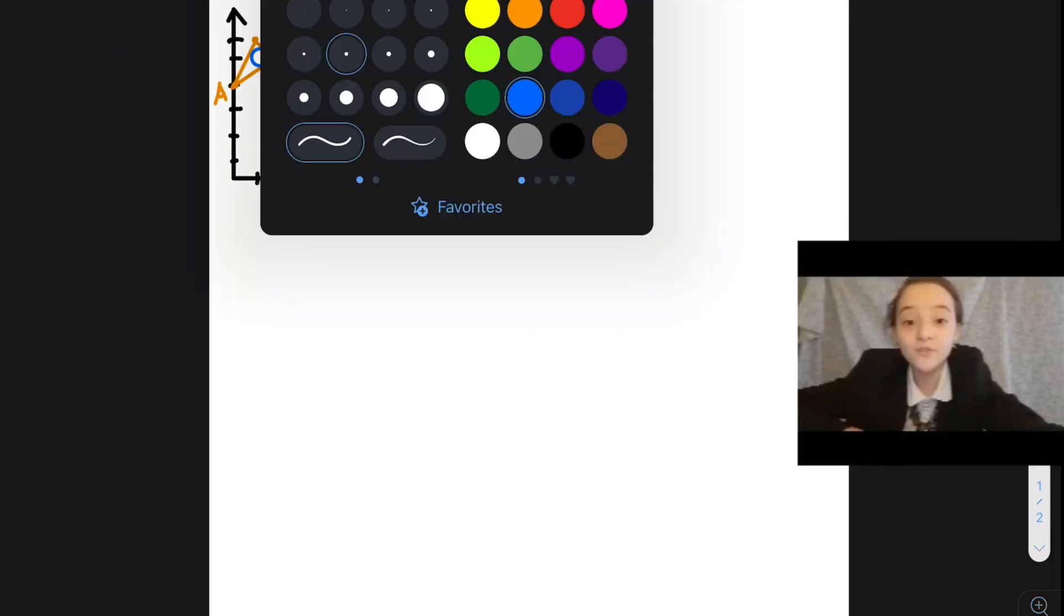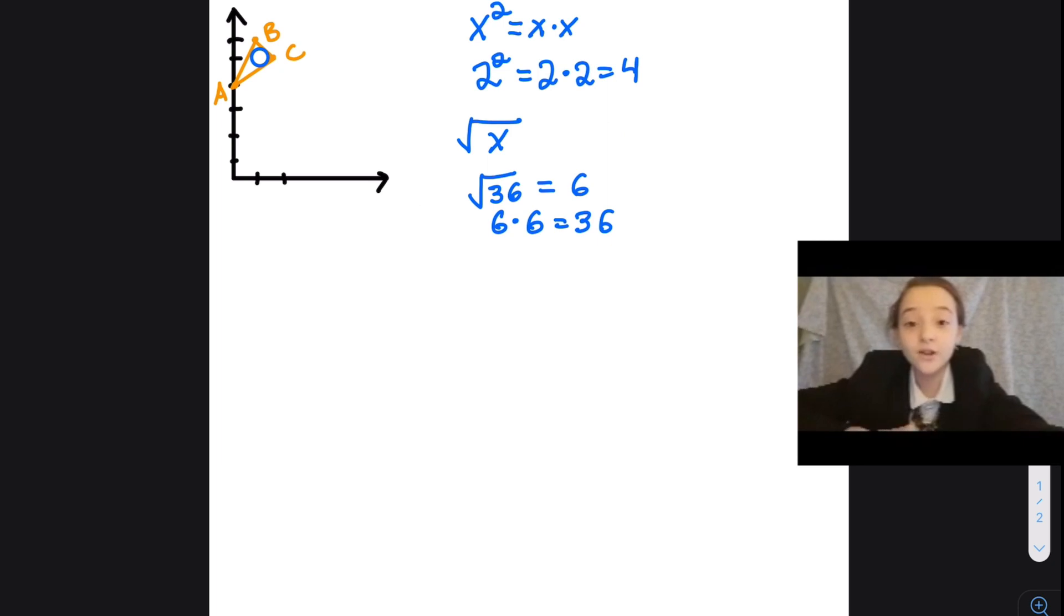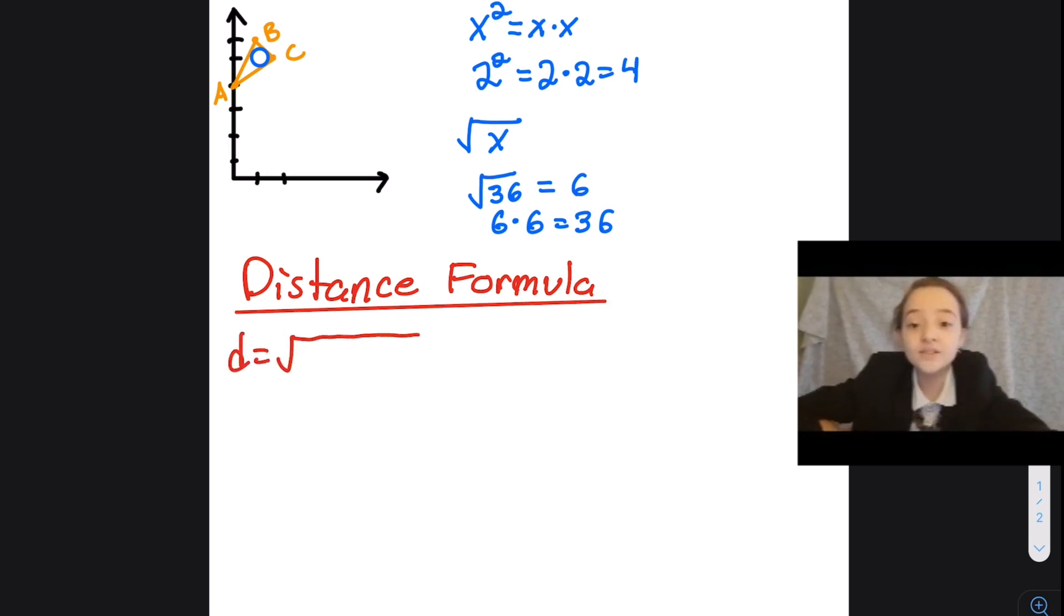First, we will talk about the formulas we will use to solve for the area of your hot tub. The first formula that we will be using is called the distance formula. The distance formula can be used to find the distance between any two points on a graph. This is the square root of (x2 minus x1) squared plus (y2 minus y1) squared.